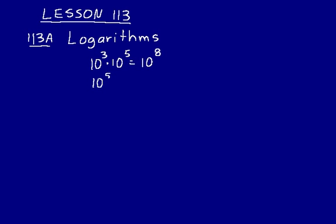If we had 10 to the 5th divided by 10 to the 3rd, we know that would be equal to 10 to the 5 minus 3, or 10 squared. And if we had 10 to the 3rd to the 5th power, we know that we would multiply those two exponents, and we would end up with 10 to the 15th.